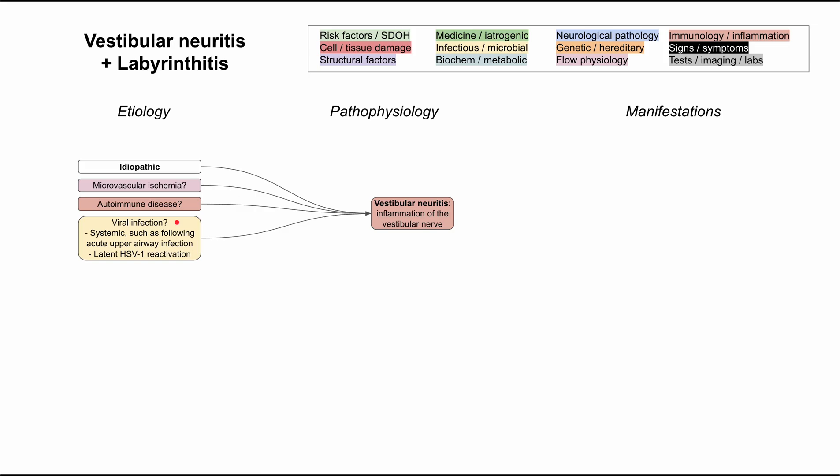The most prominent theory is probably viral infection. This could be systemic viral infection, such as an acute upper airway infection. It's pretty common that a person has a viral illness, just like a cold or cough, that leads to vestibular neuritis for a few months. There's also some evidence that latent herpes simplex virus can be reactivated and trigger an episode of vestibular neuritis.